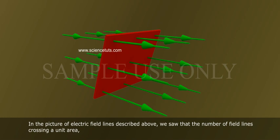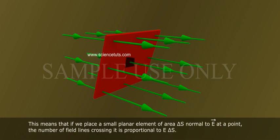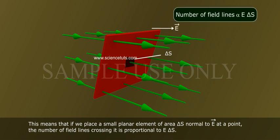In the picture of electric field lines described above, we saw that the number of field lines crossing a unit area placed normal to the field at a point. This means that if we place a small planar element of area delta s normal to e bar at a point, the number of field lines crossing it is proportional to e delta s.